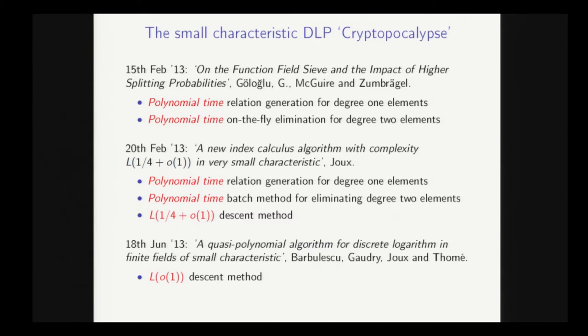And previously, these two stages were both sub-exponential type. So the first result was in February last year, which was by myself and three colleagues at University College Dublin, namely Faruk Gologlu, Gary McGuire, and Jens Zumbragel. And what we showed is that the first stage in index calculus can actually be done in polynomial time. And also, the hardest part during the descent, which is the elimination of degree 2 elements, that can also be done in polynomial time.